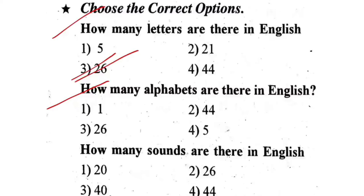Next question: How many alphabets are there in English? First one, 1. Second one, 44. Third one, 26. Fourth one, 5. The correct answer is fourth one — 44.